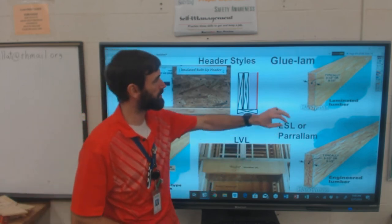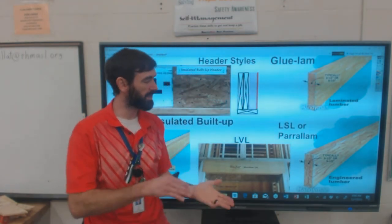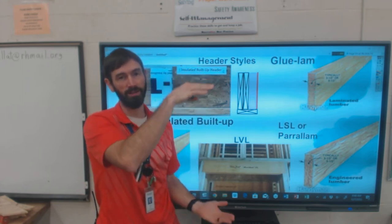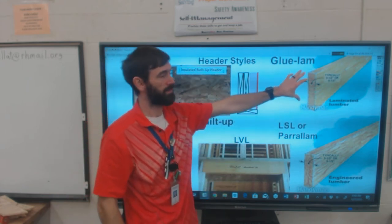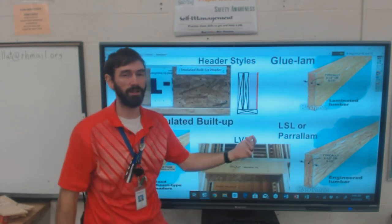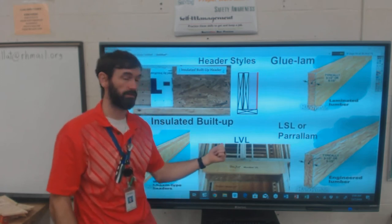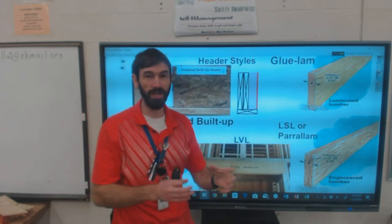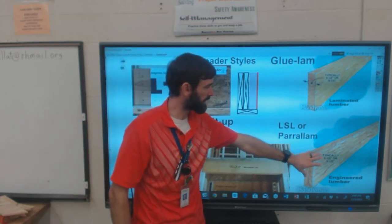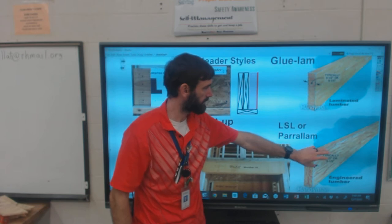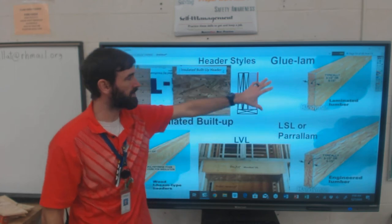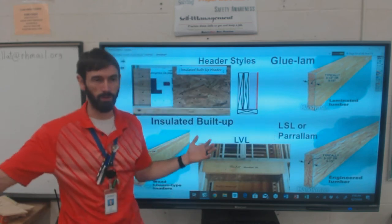Some other engineered options are a glue lam, which is like stacked two-by-fours or two-by-sixes that are glued, stacked, and pressed together. This creates an incredibly strong beam. Your LSL or parallel - LSL stands for laminated strand lumber versus laminated veneer lumber. Laminated strand is kind of like OSB but it's one big block. These are all engineered options for those larger openings.